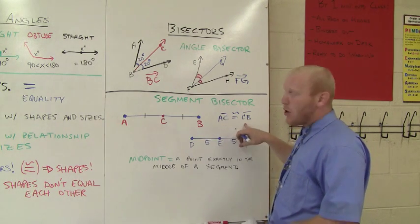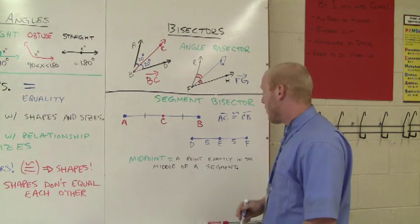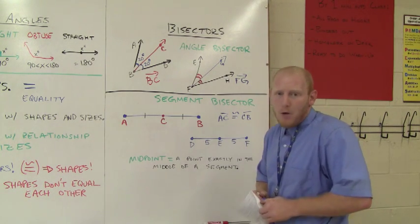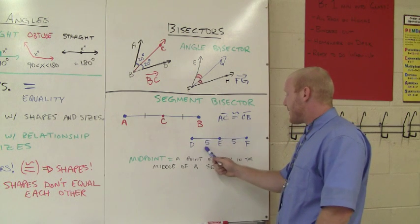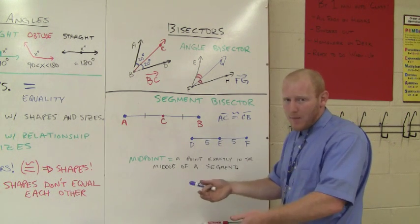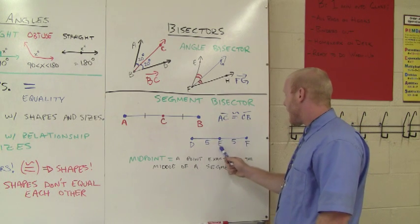So I could say that segment AC is congruent to segment CB because of these hash marks. That's how I know. Down here, if I put numbers, then I know that they're congruent. Because this says five and this says five, talking about the length, I know that segment DE is congruent to segment EF.